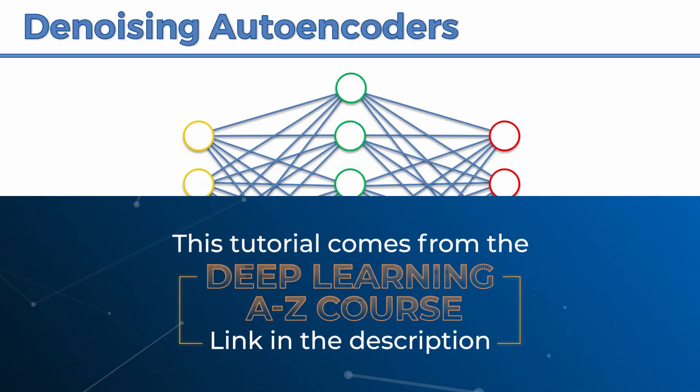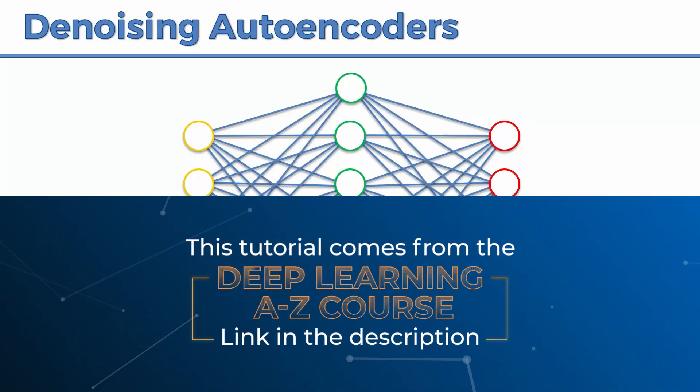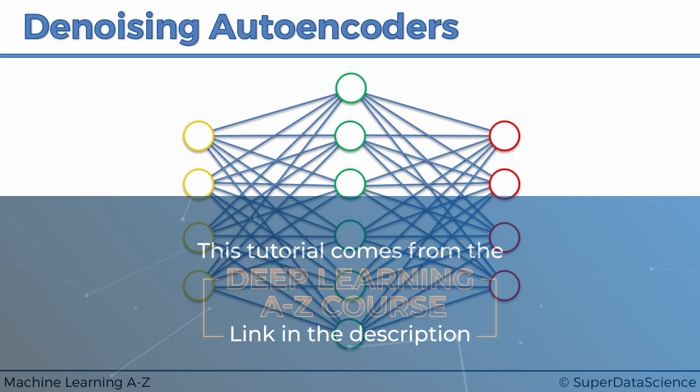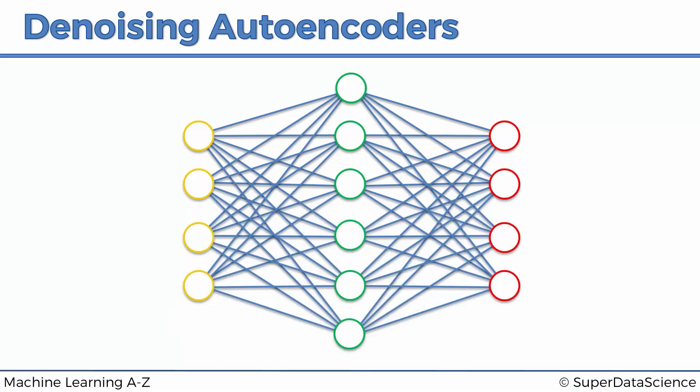Denoising autoencoders is another regularization technique which is here to combat the problem of when we have more nodes in the hidden layer than in the input layer and therefore the autoencoder can simply just copy these values across without finding any meaningful features and undergoing the training that we wanted to undergo.